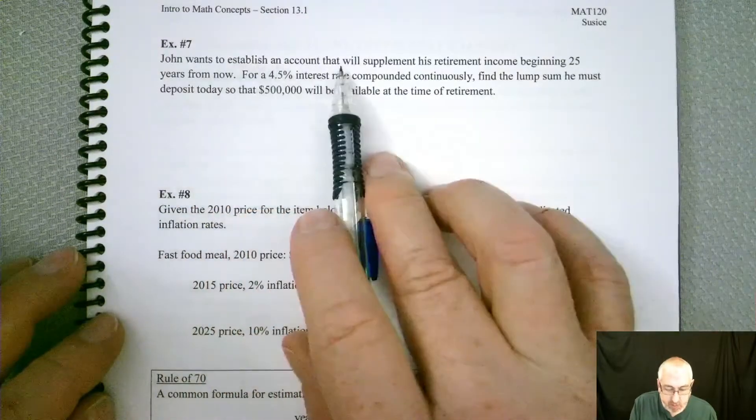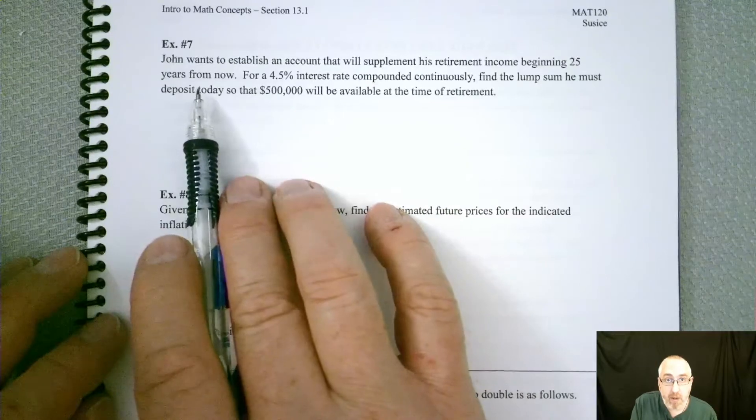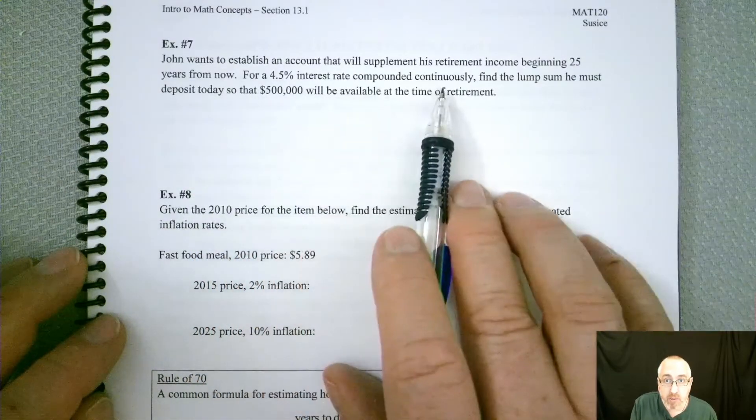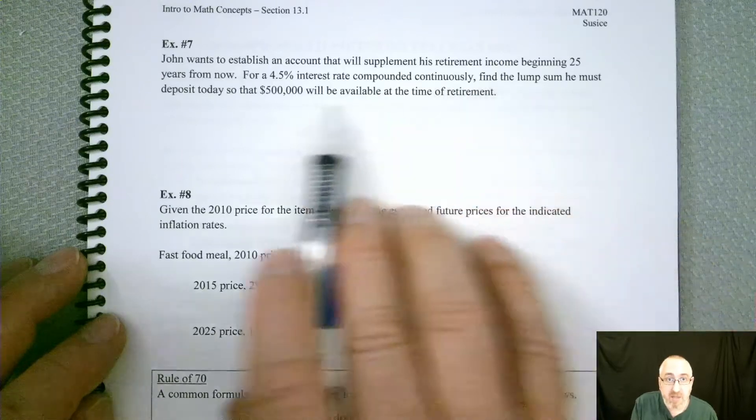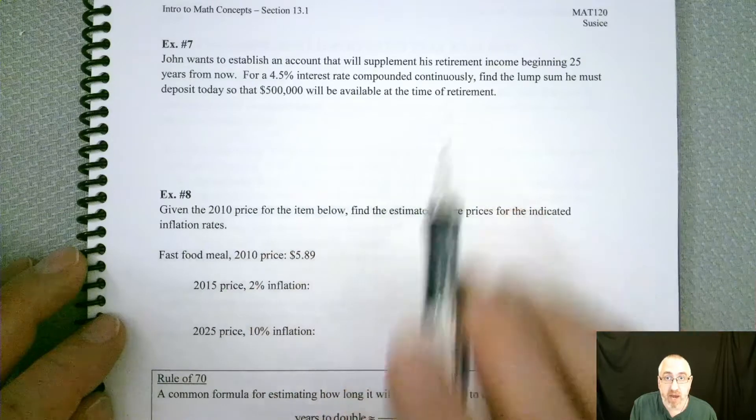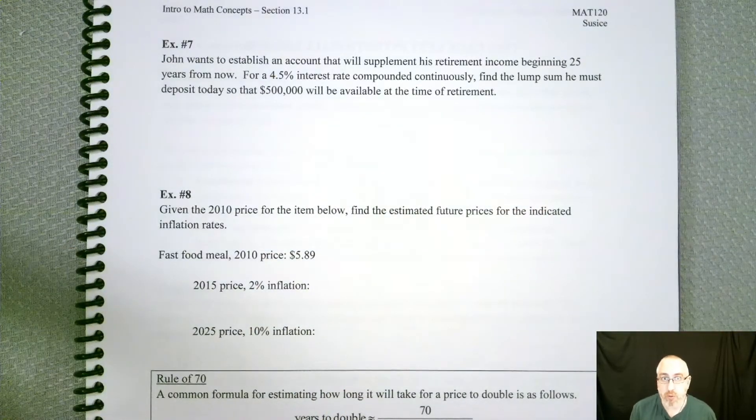So John wants to establish an account that will supplement his retirement income beginning 25 years from now. For a 4.5% interest rate compounded continuously, find the lump sum he must deposit today so that $500,000 will be available at the time of retirement.